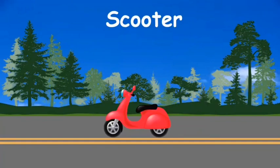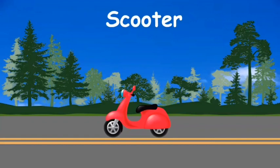What is this? This is a scooter — it is a two-wheeler and two people can sit in it. When riding a scooter, you must remember to wear a helmet. The next one is a bike, which is also a two-wheeler. For a bike, you also need to wear a helmet.